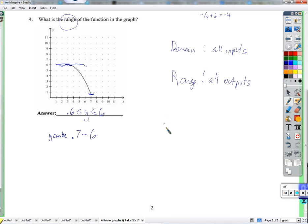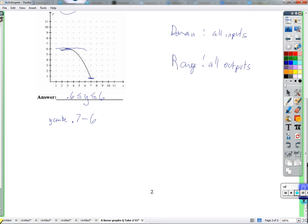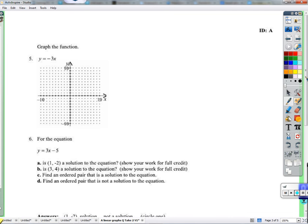If we were to talk about the domain, it would be something different. It would be what the x values can be. But I didn't ask about that. I asked about the range, which is the outputs, which, that's y. Those are the y values. Alright.